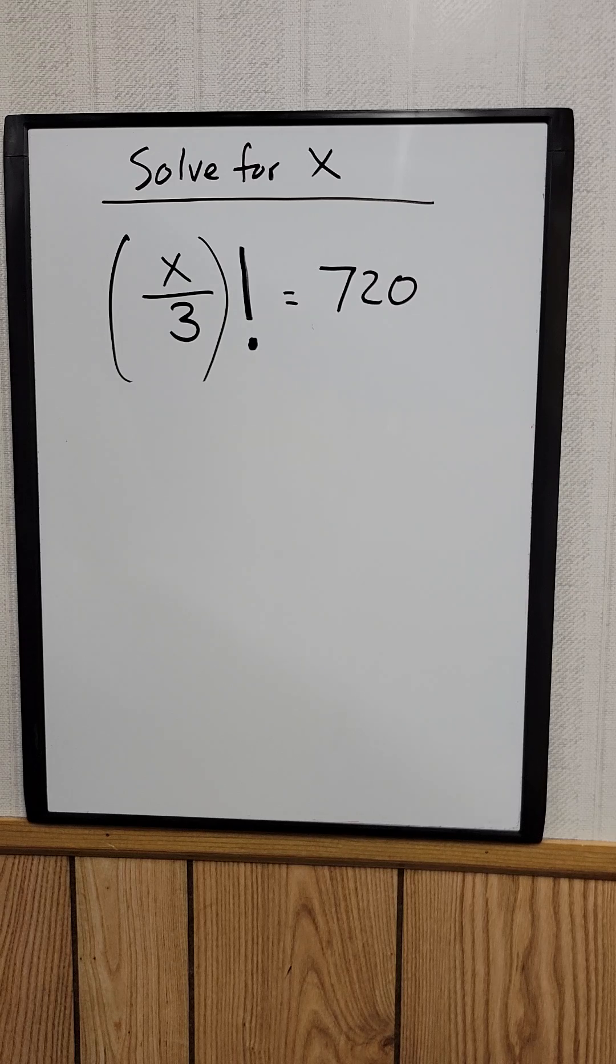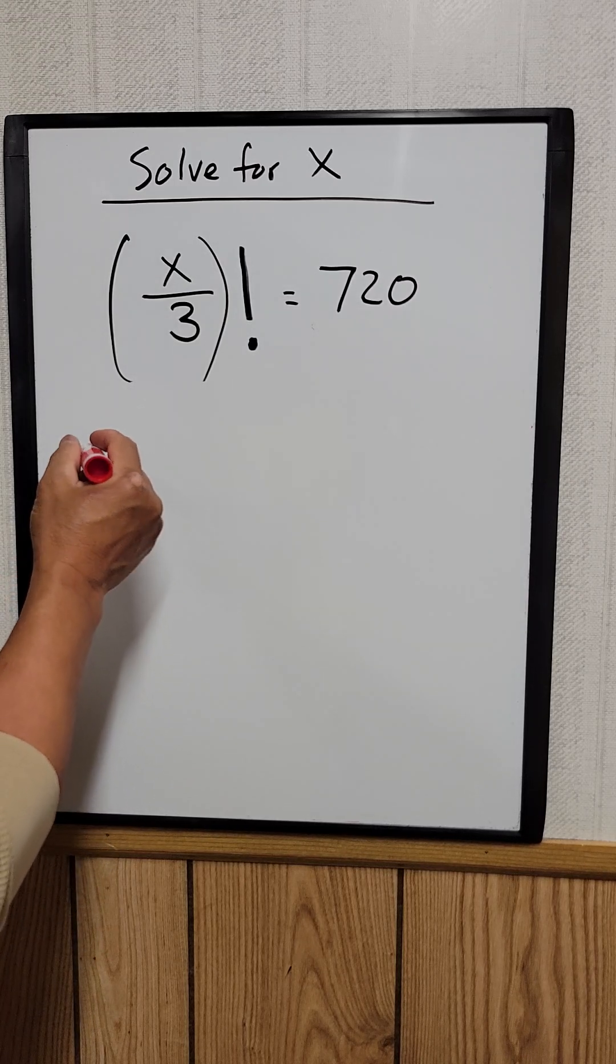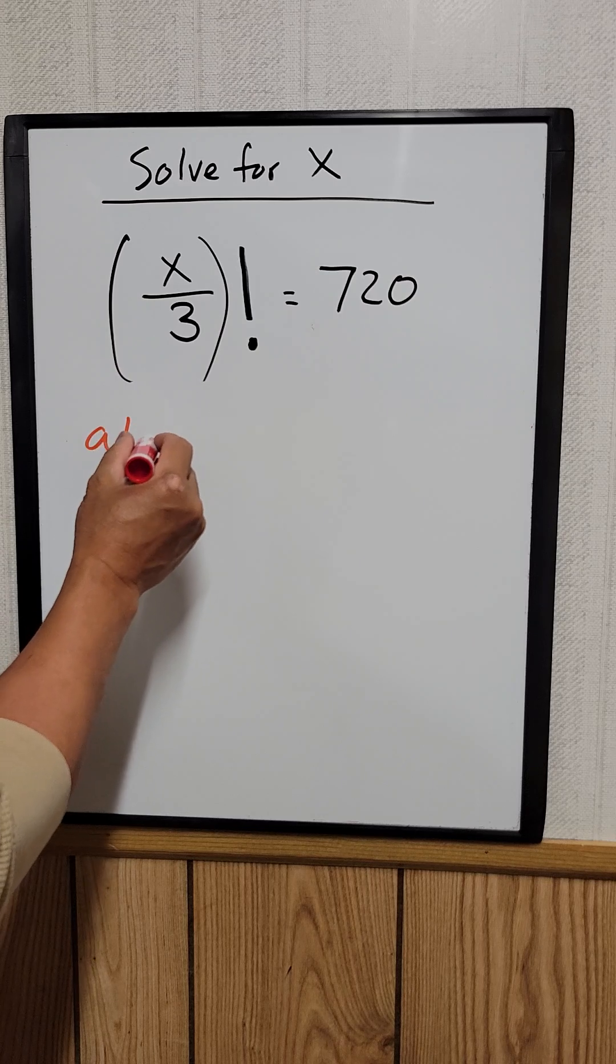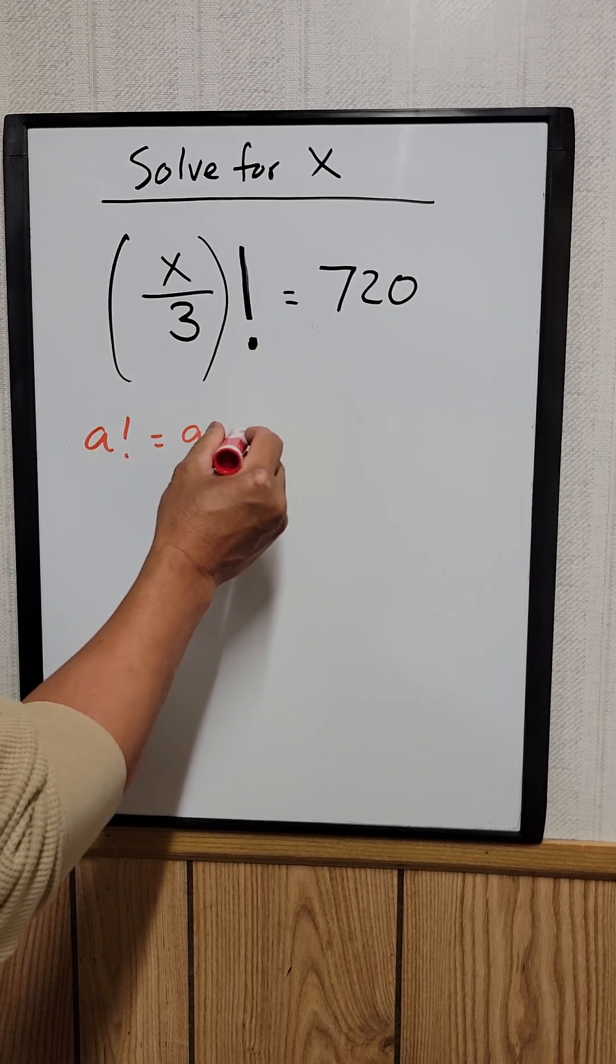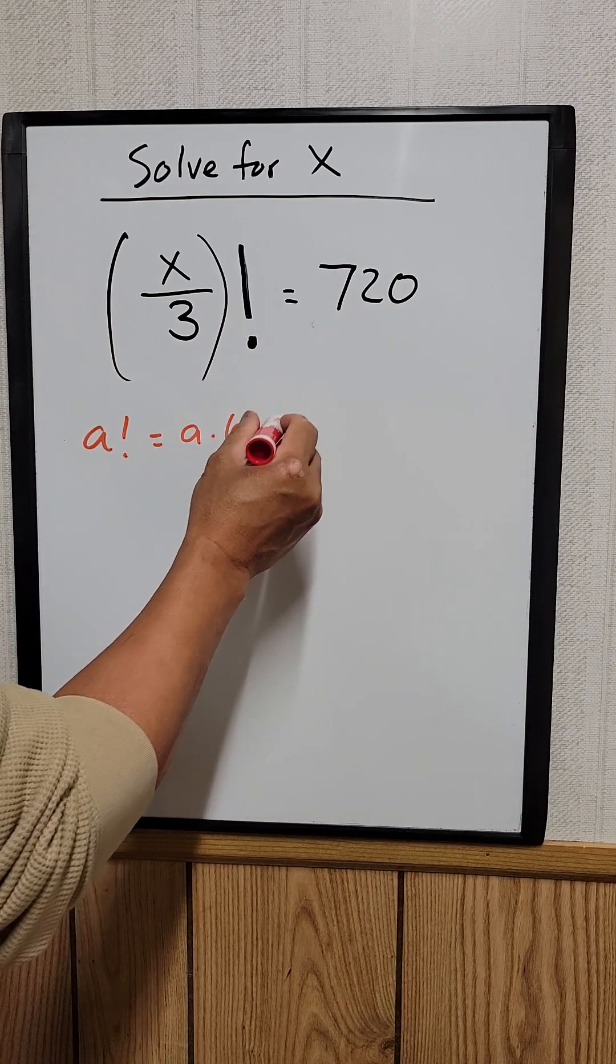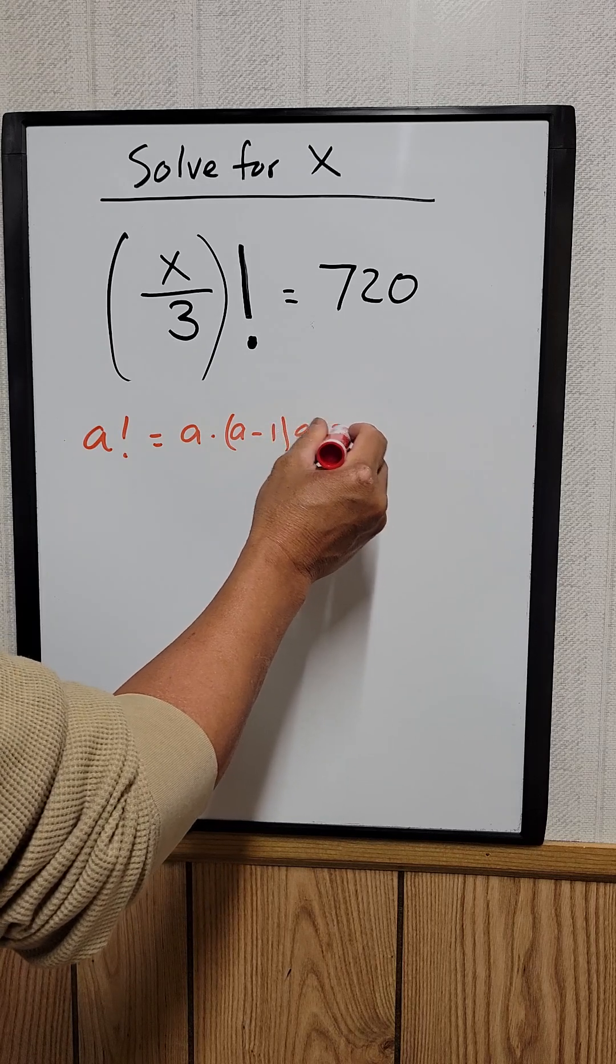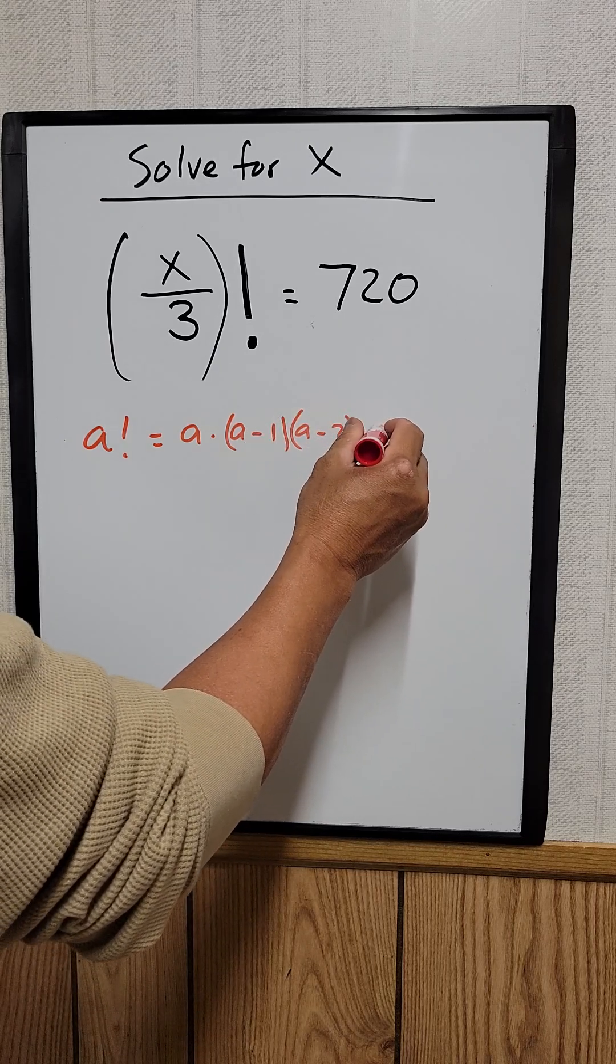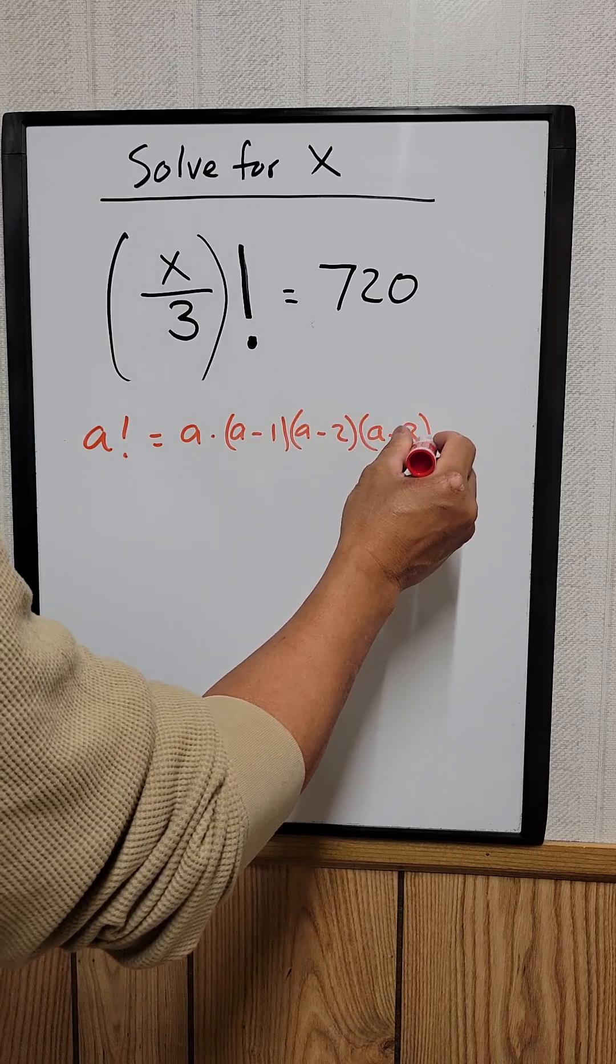So exactly what is a factorial? A factorial, for example, a factorial, which is equal to a times a minus 1, a minus 2, a minus 3, and so on.